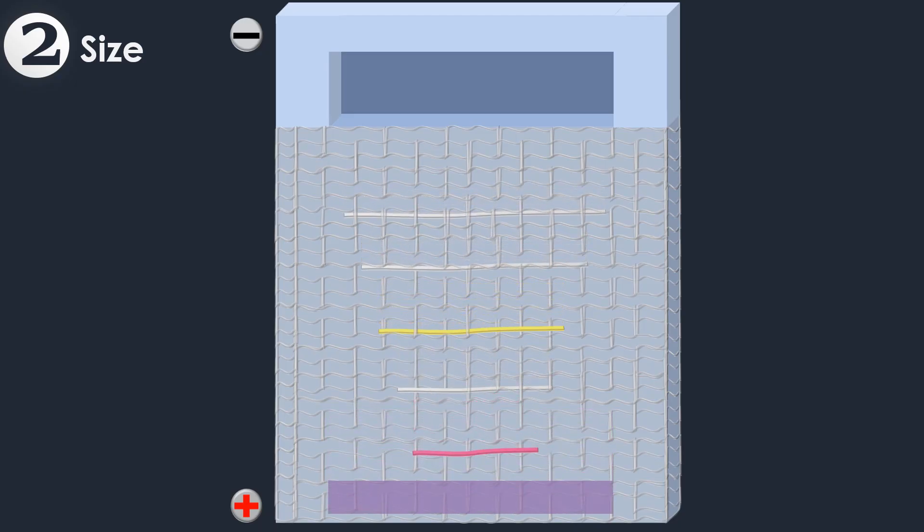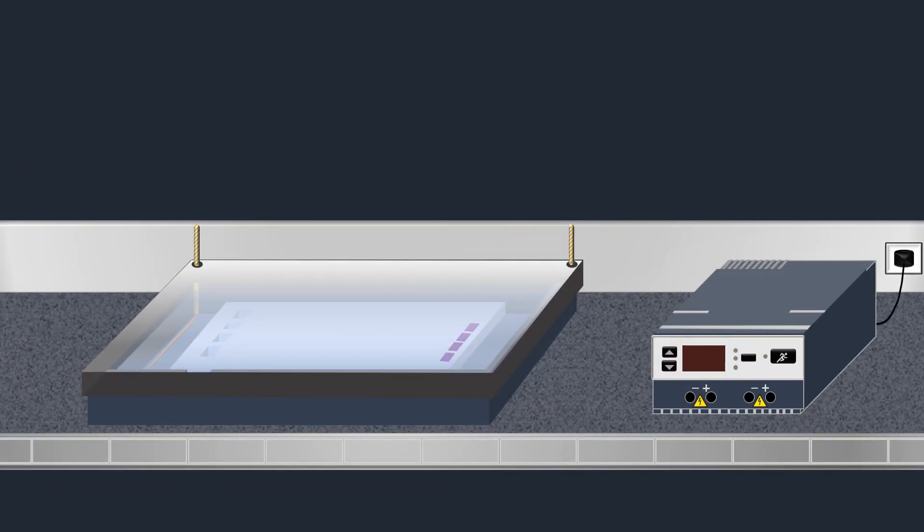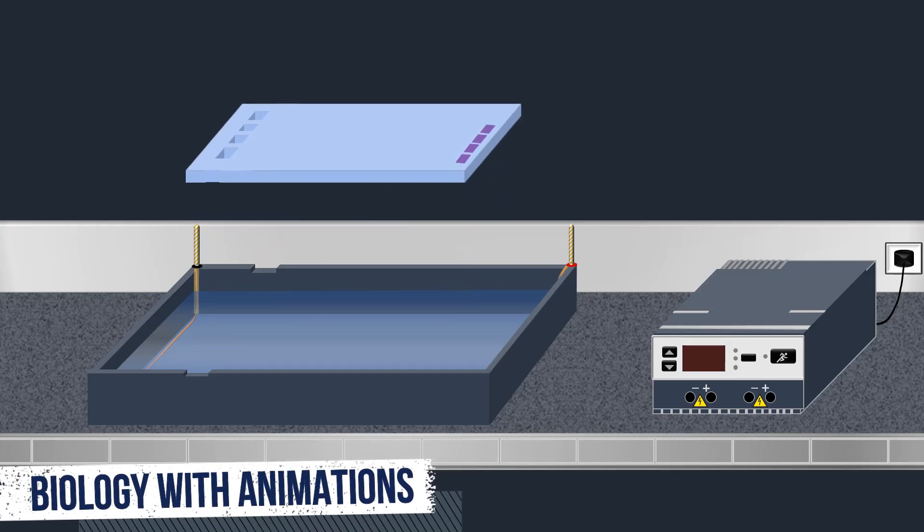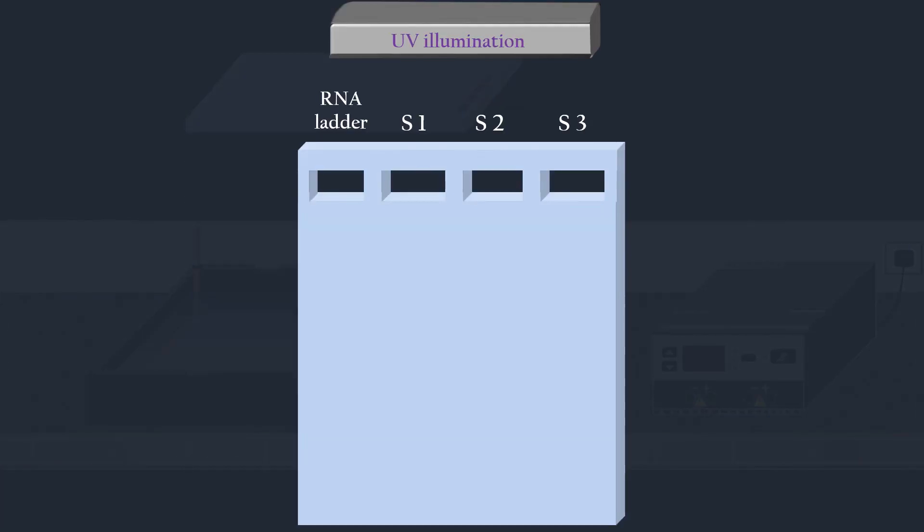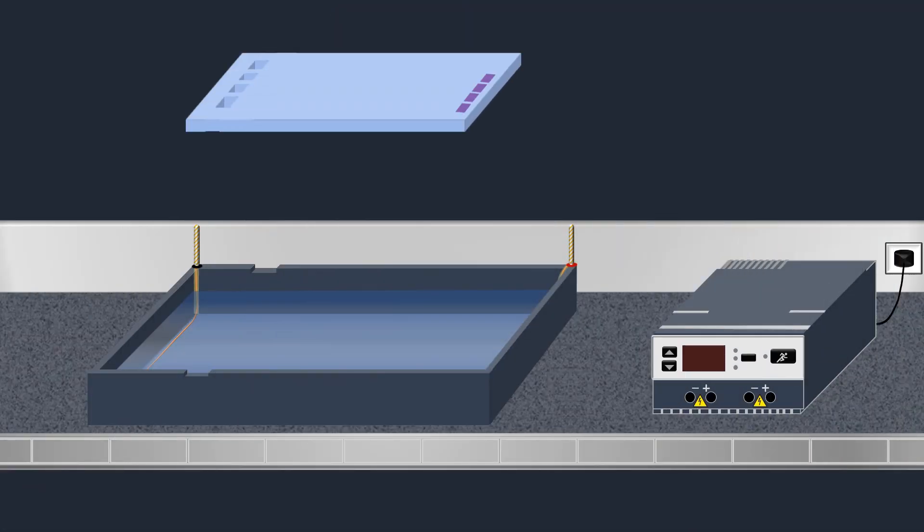Because the RNA-formaldehyde adducts are unstable, formaldehyde must be present in the agarose gel to maintain the RNA in the denatured state. After the electrophoresis is complete, the RNA molecules in the gel can be stained. When the gel is stained with an intercalating dye such as ethidium bromide, the RNA molecules can be seen under UV light as bands, each representing a group of same-sized RNA molecules.